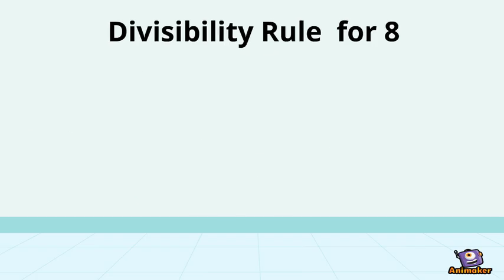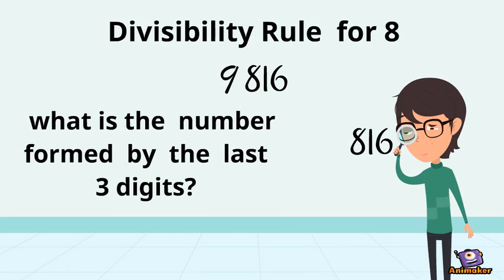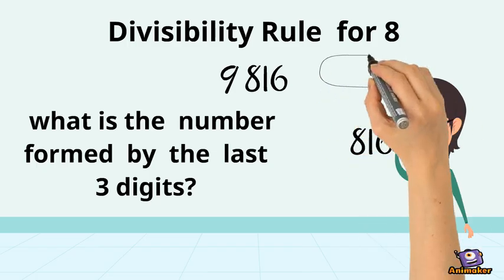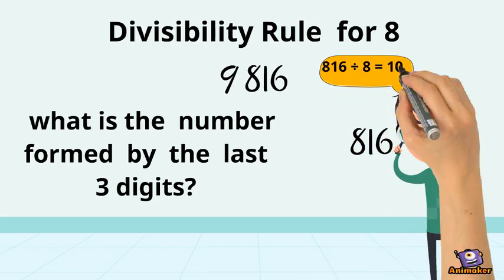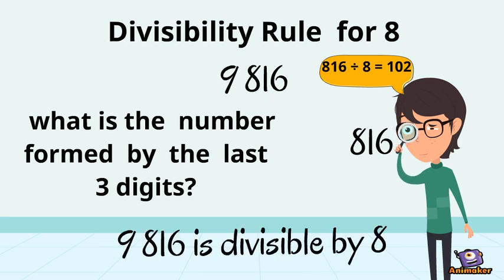Example: 9816. The number formed by the last three digits is 816. When you divide 816 by 8, the answer is 102. That's why 9816 is divisible by 8.